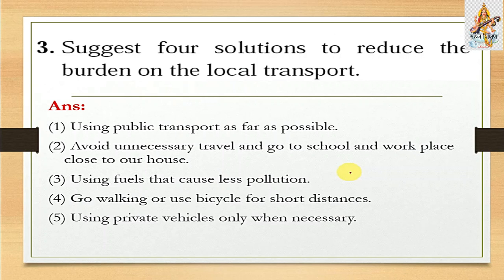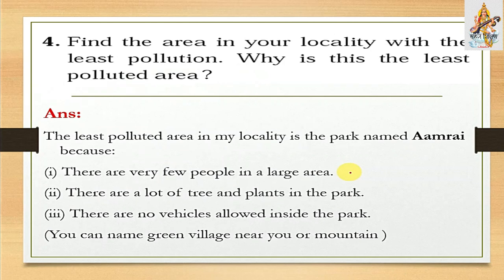Question number four: Find the area in your locality with the least pollution. Why is it the least polluted area? The least polluted area in my locality is the park named Amurai, because: there are very few people in a large area, there are a lot of trees and plants, and no vehicles are allowed inside the park. You can also name a green village near you or any mountain.